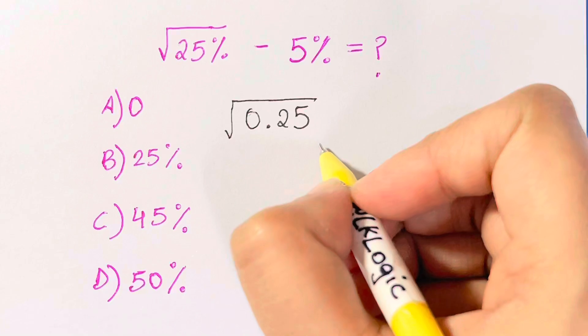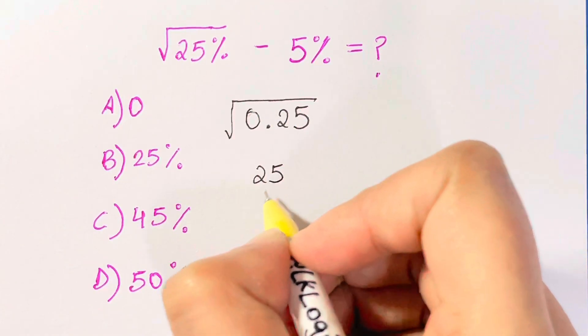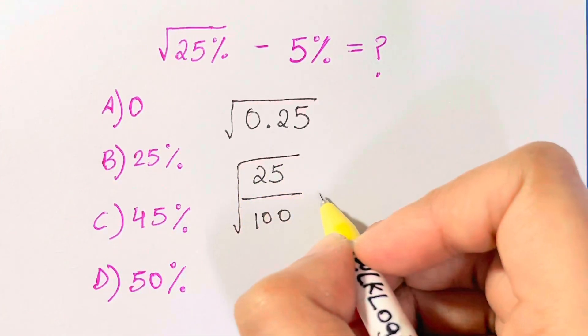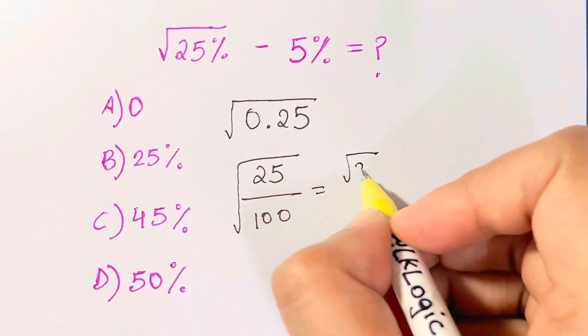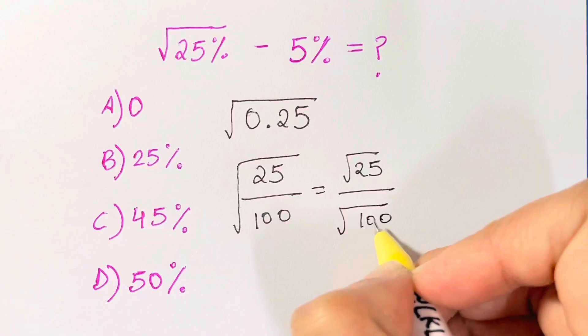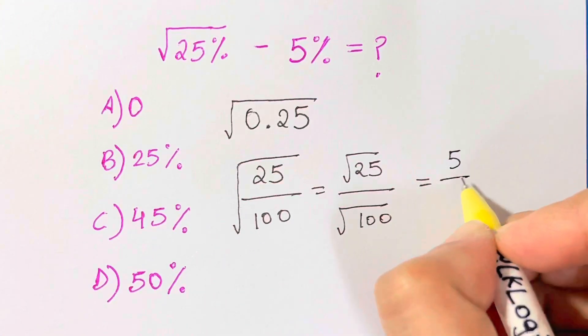Then bring it back to a fraction: 25 over 100 under the root, which can be written as square root of 25 over square root of 100. Square root of 25 is 5, over square root of 100 is 10.